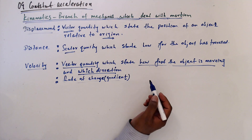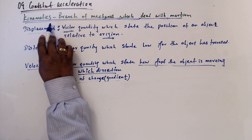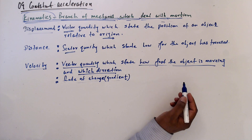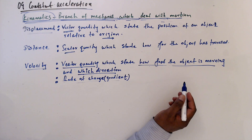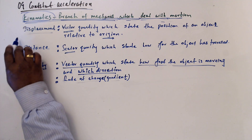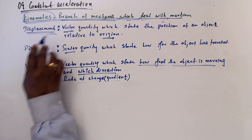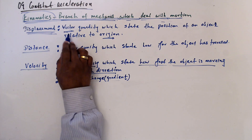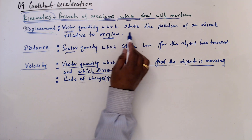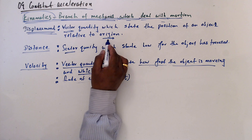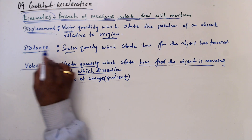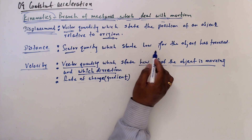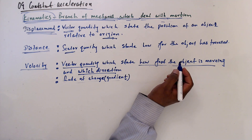Constant acceleration kinematics is the branch of mechanics which deals with motion. Under kinematics, we discuss displacement, distance, and velocity. Displacement is a vector quantity which states the position of an object relative to the origin. Distance is a scalar quantity — it has no direction, just magnitude — which states how far an object has traveled.